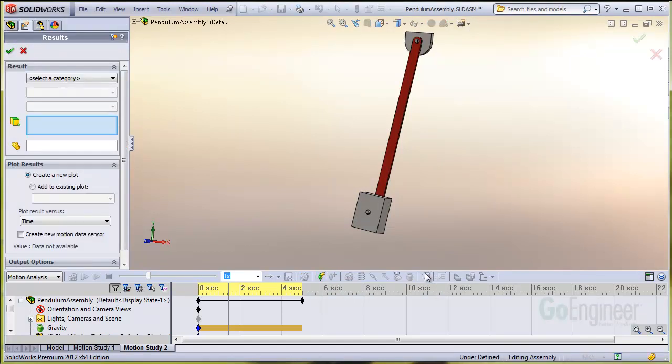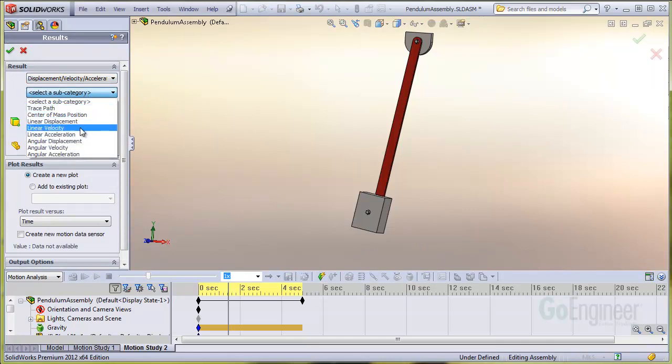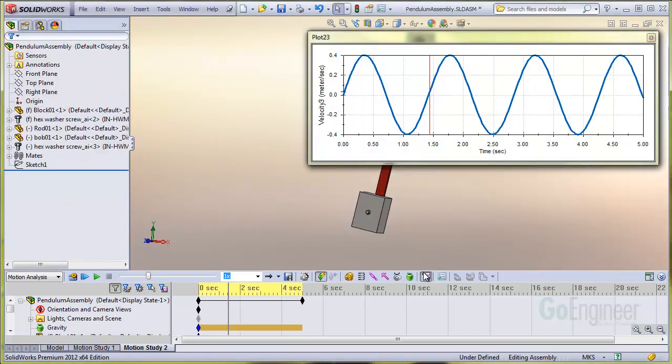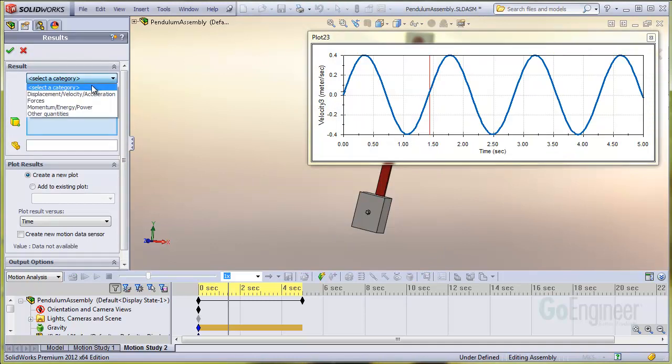It's really beneficial to get other output very quickly. For example, we're graphing the horizontal speed of the bob here. So I'll pick linear velocity and the x component. Now I'll do the vertical speed of the bob by selecting the y component.